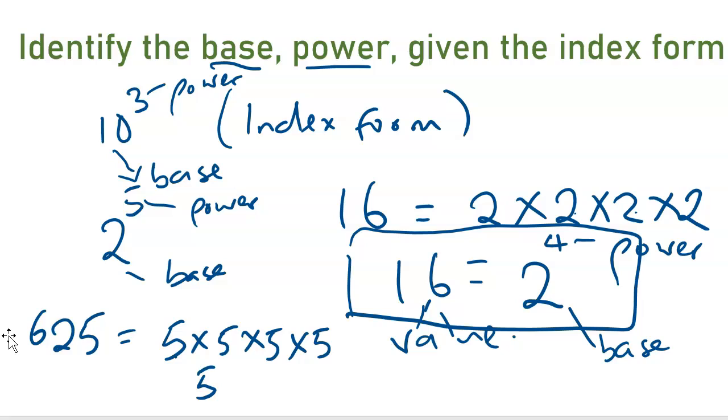So therefore, in index form, it will be 5 to the power of 4, where 5 is the base and 4 is the power and 625 is the value.